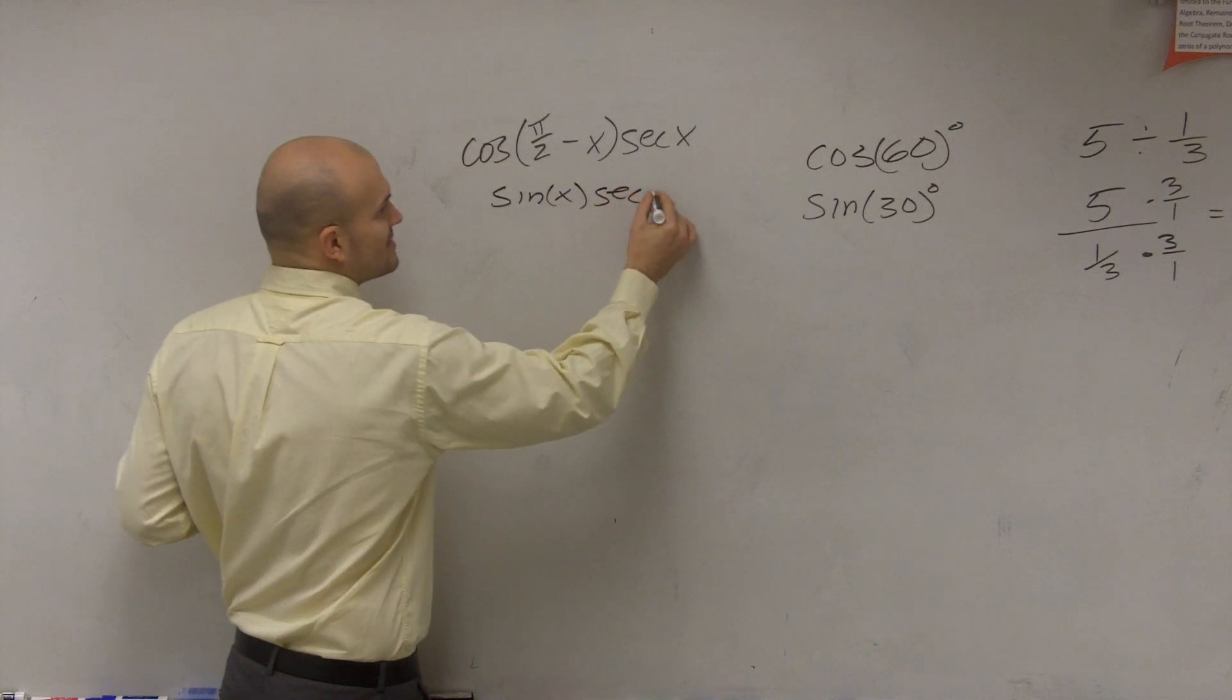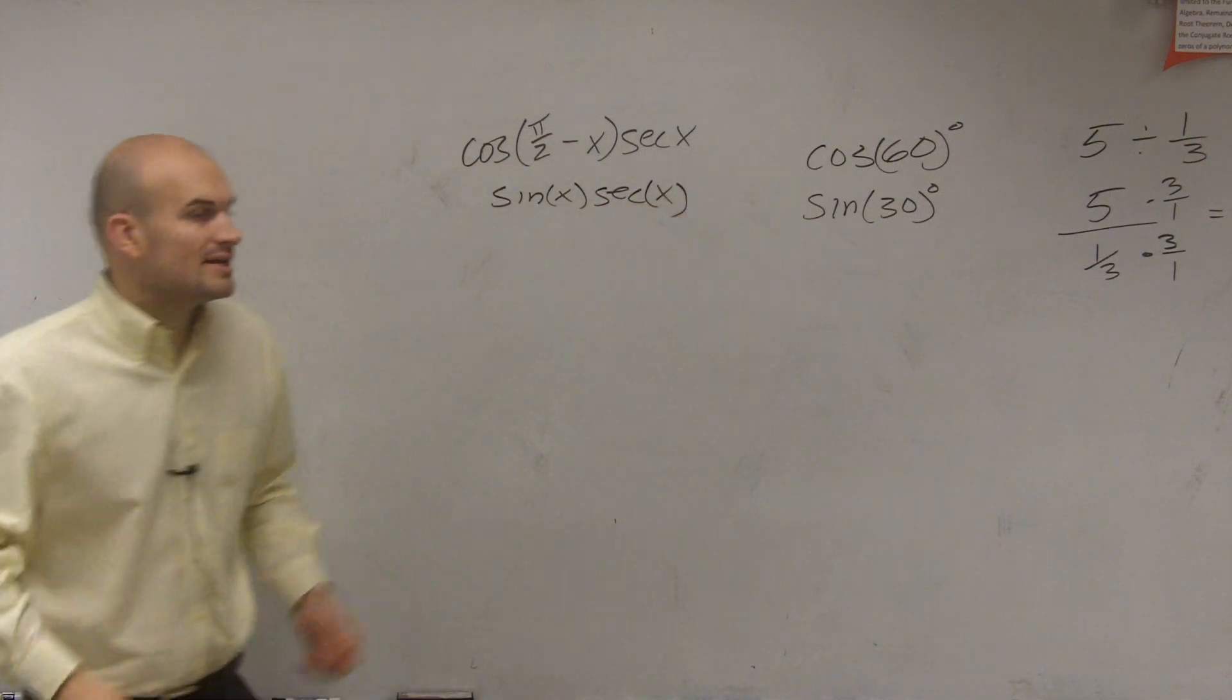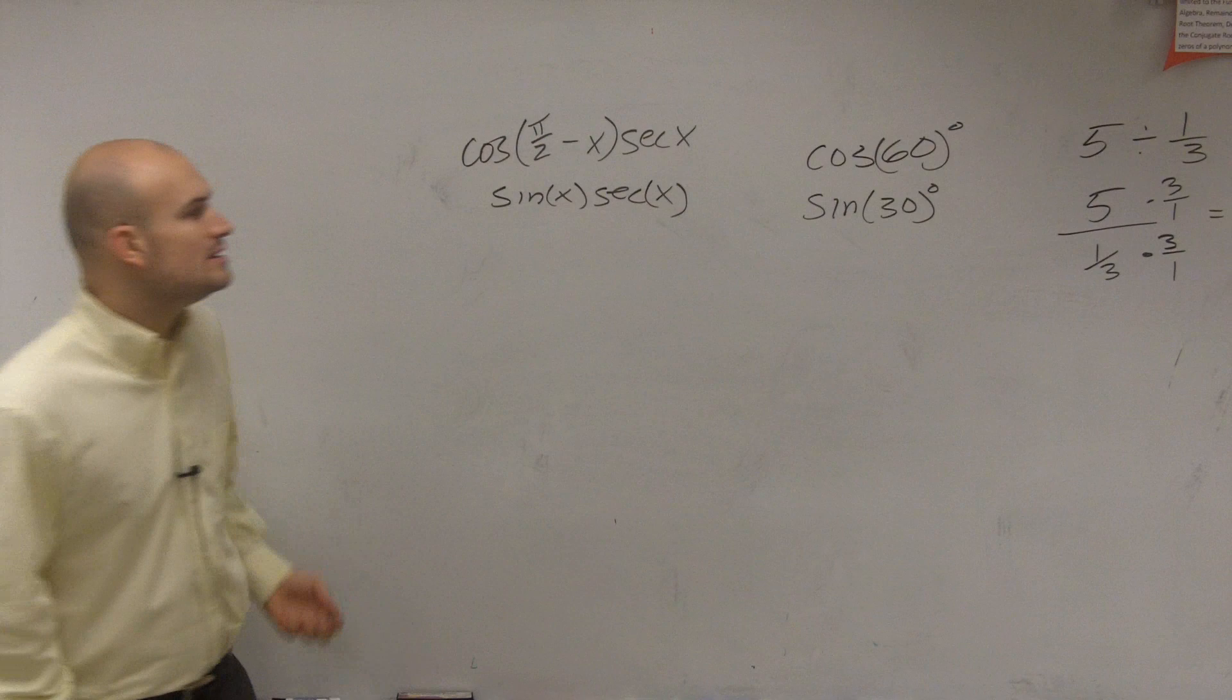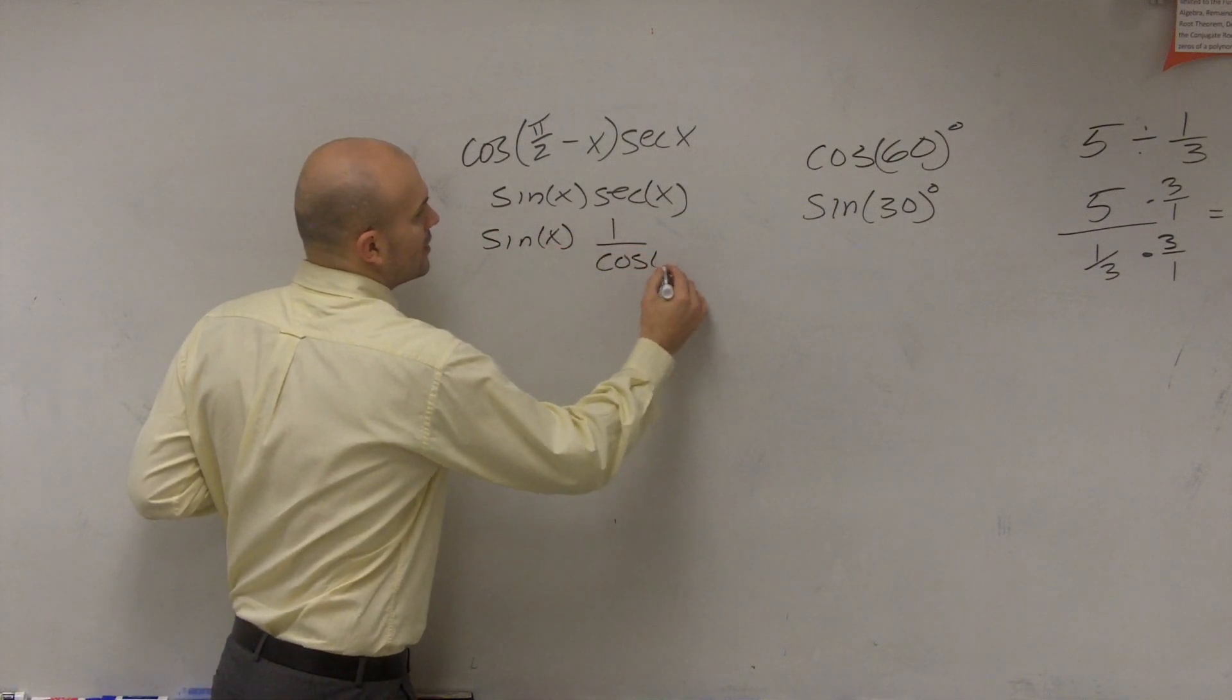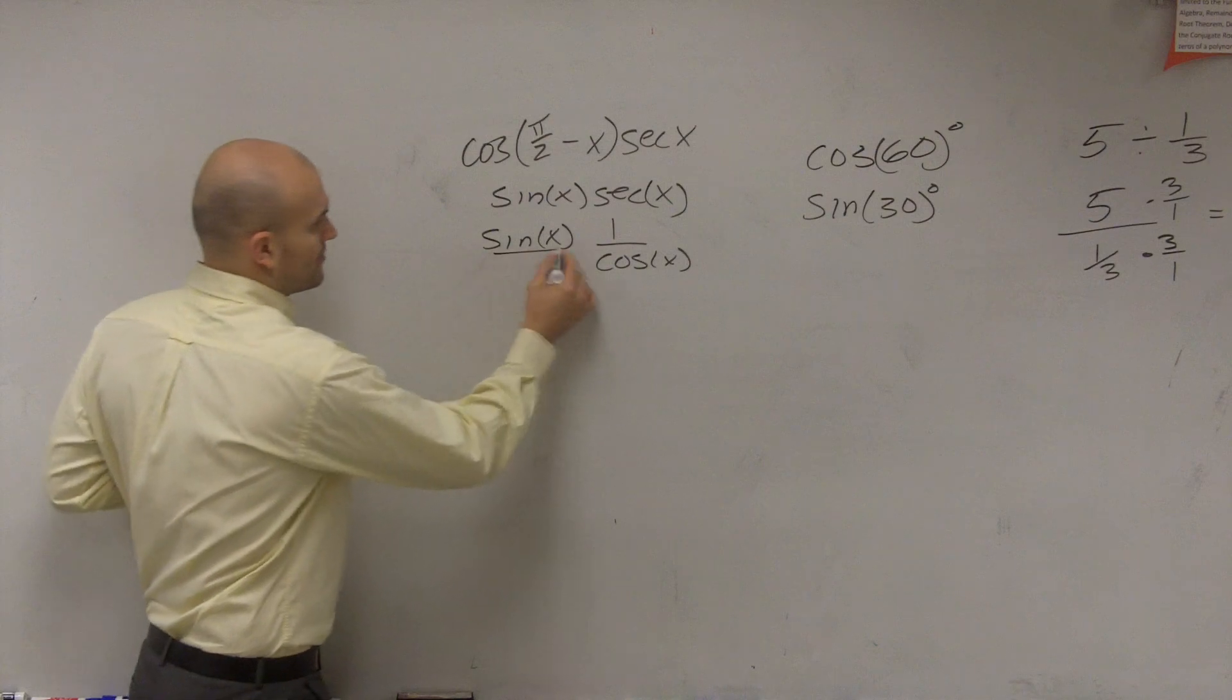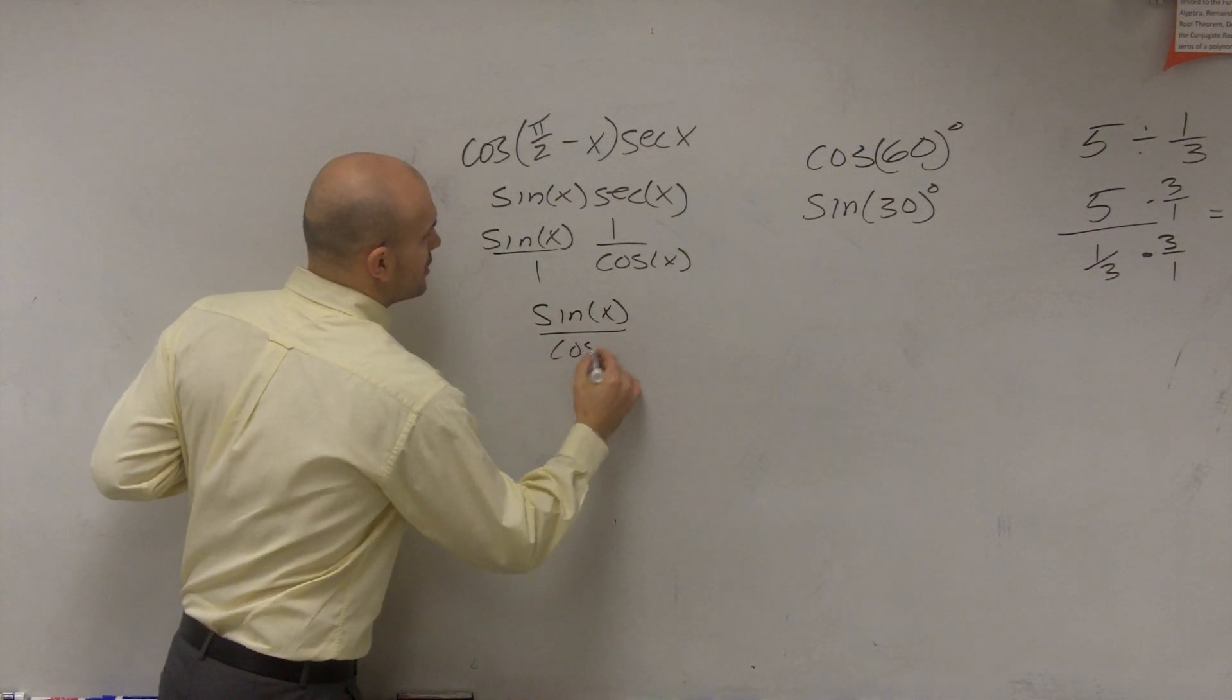Then we have that multiplied by secant of x. Now, the secant of x right now, I'm still not in a simplified form. That's not really going to help me out, but let's go ahead and maybe transform secant. So by using the reciprocal identities, I can transform secant as to 1 over cosine of x. If we multiply across, I get sine of x over cosine of x.